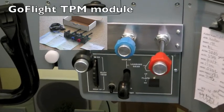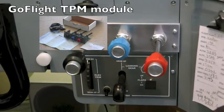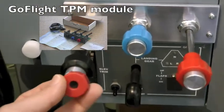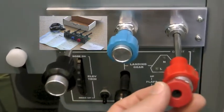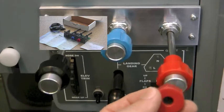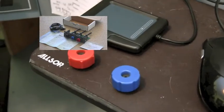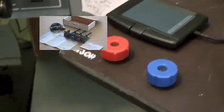So what I have done is I have this TPM GoFlight module and I took off the knobs that I have right here. That's the knobs I took off the TPM—they're just shafts. I'll set that down here so you can see the knobs, a couple of the knobs that I took off.